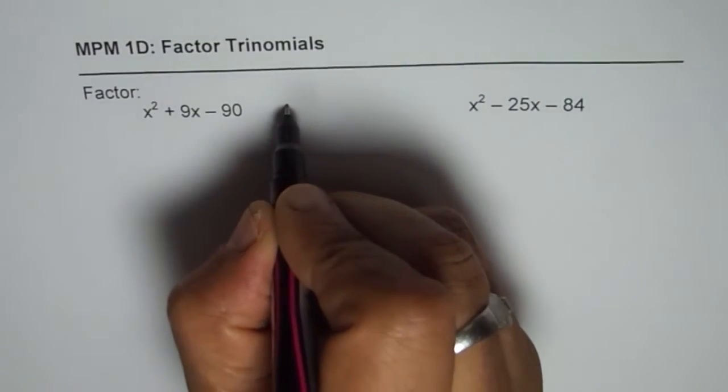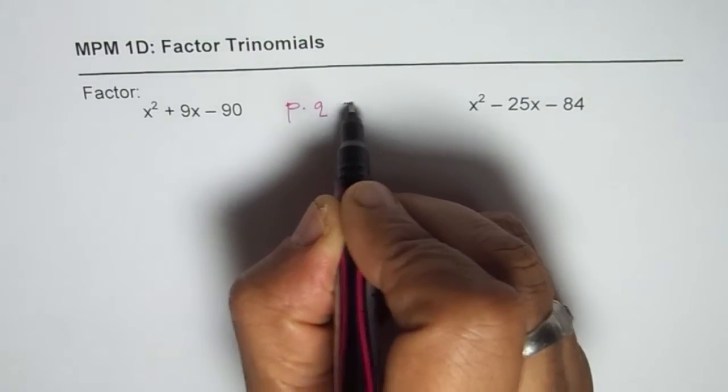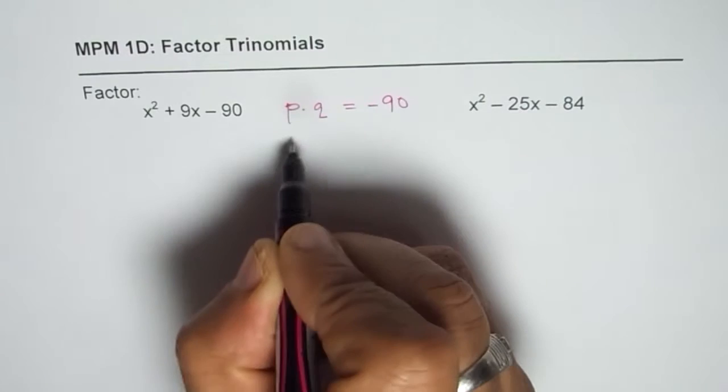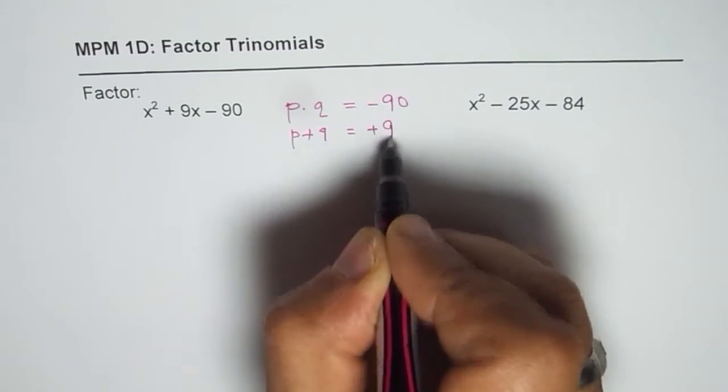The strategy is for the first one let's say if there are two integers p and q their product should be negative 90. And when we add them we should get plus 9.